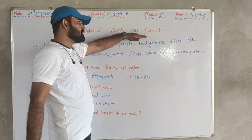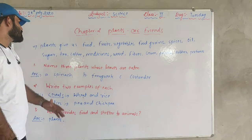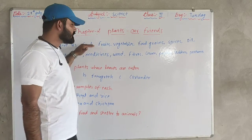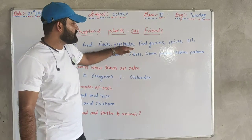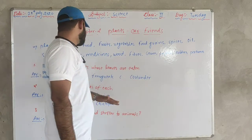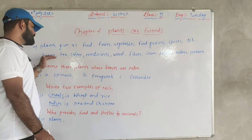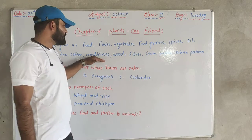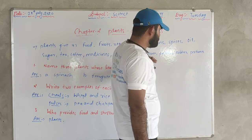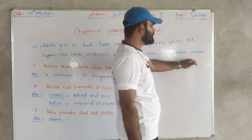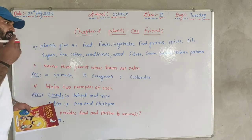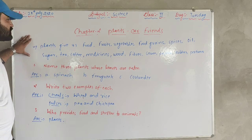Plants are our friends. The plants give us food, vegetables, fruits, food grains, spices, oil, sugar, tea, coffee, medicines, wood, fiber, gum, pepper, rubber, perfume, soap, shampoo, and more. These are what plants provide us.